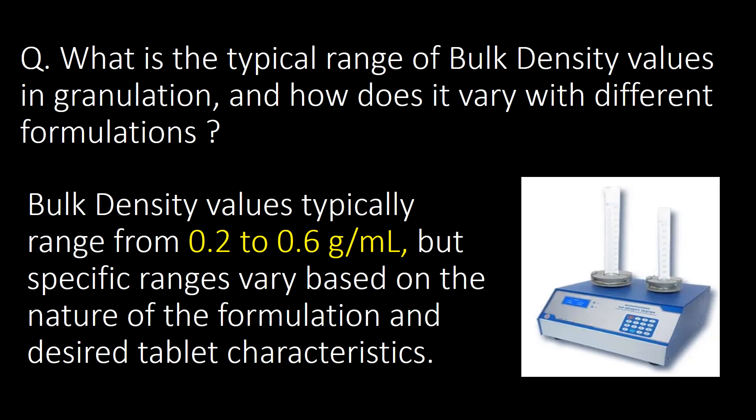What is the typical range of bulk density values in granulation and how does it vary with different formulations? Bulk density values typically range from 0.2 to 0.6 g/mL, but specific ranges vary based on the nature of the formulation and desired tablet characteristics.